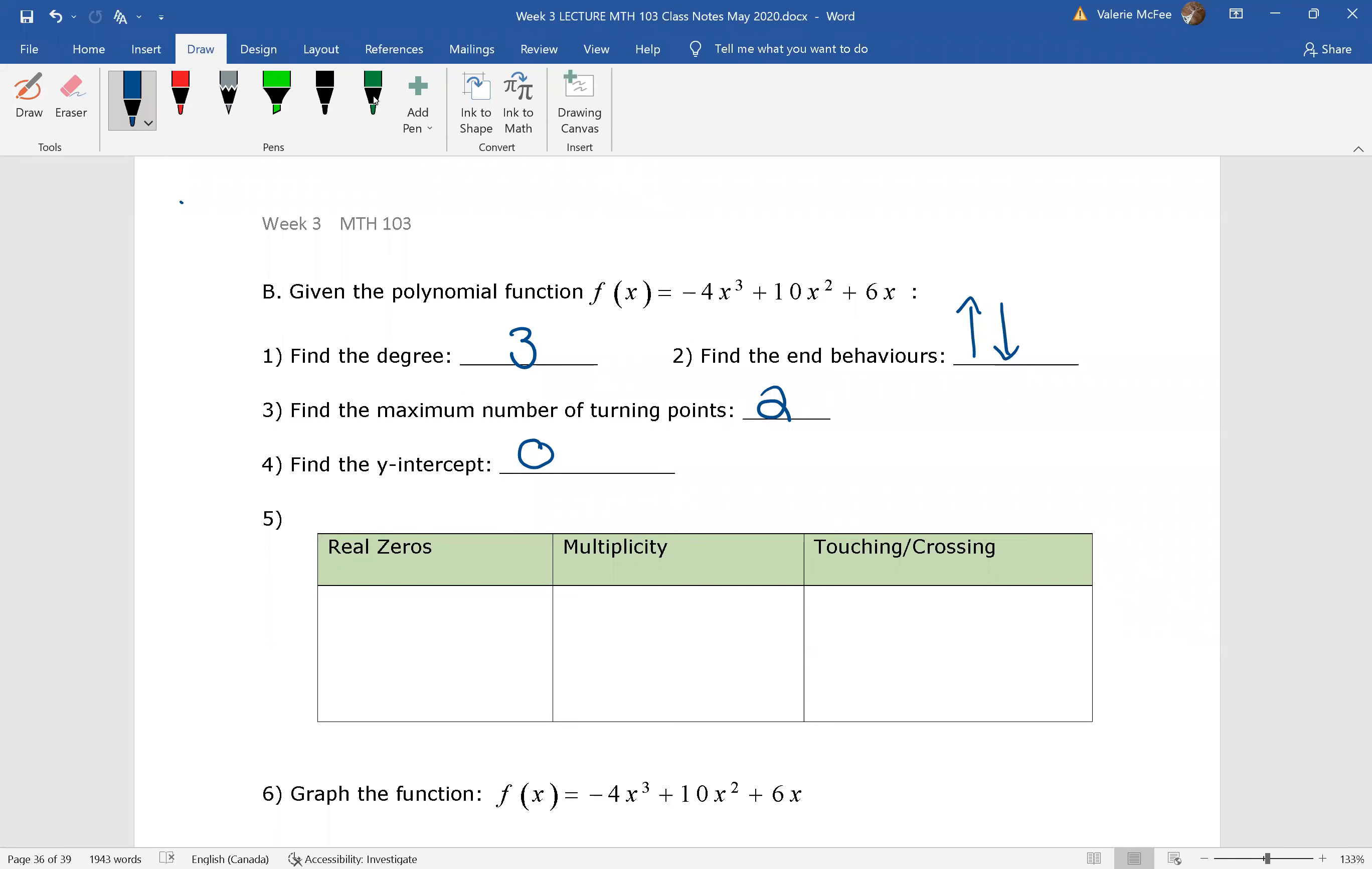So this polynomial was in standard form, that meant that 3 is our highest exponent. It had a negative leading coefficient, so when it's odd and negative, we know we can think about that graph y equals negative x cubed, so our ends are rising on the left and falling on the right. The maximum number of turning points is always one less than the degree. And if we find the f of 0, we found the y-intercept.